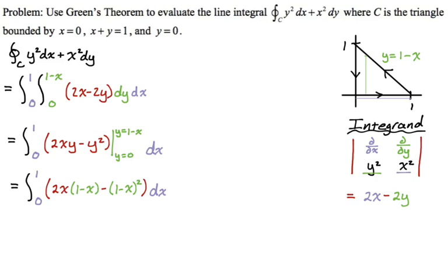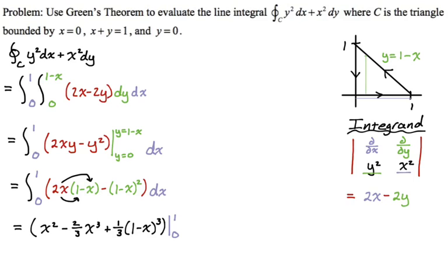Now I need to integrate this by distributing and then integrating. The integral of 2x with respect to x is x squared. The integral of negative 2x squared is negative two-thirds x cubed. For the next term, I'm doing a u-substitution where u is one minus x. By the chain rule you pick up another negative, so ultimately I end up with one-third times (one minus x) cubed. Evaluating from zero to one: plugging in one gives one minus two-thirds and then zero, so one minus two-thirds. Minus plugging in zero, which gives zero, zero, and one-third. Simplifying all of this gives zero.